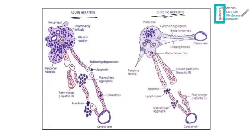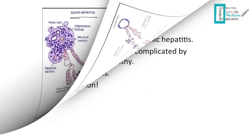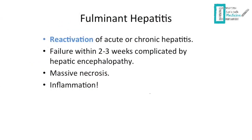Here are the main differences between chronic and acute hepatitis. We also have another type, which is fulminant hepatitis — a severe form of reactivation of acute or chronic hepatitis. It usually ends up with hepatic failure within two to three weeks, and is complicated by hepatic encephalopathy and massive necrosis.